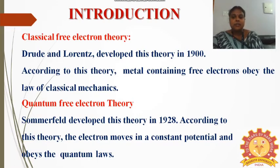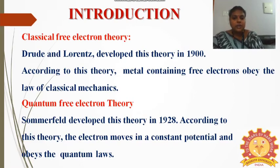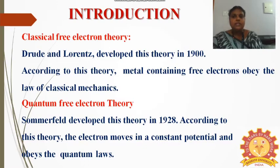The next theory is the Quantum Free Electron Theory. This was proposed by the scientist Sommerfeld in the year 1928. According to his concept, the electron moves in a constant potential, and hence obeys the quantum laws.